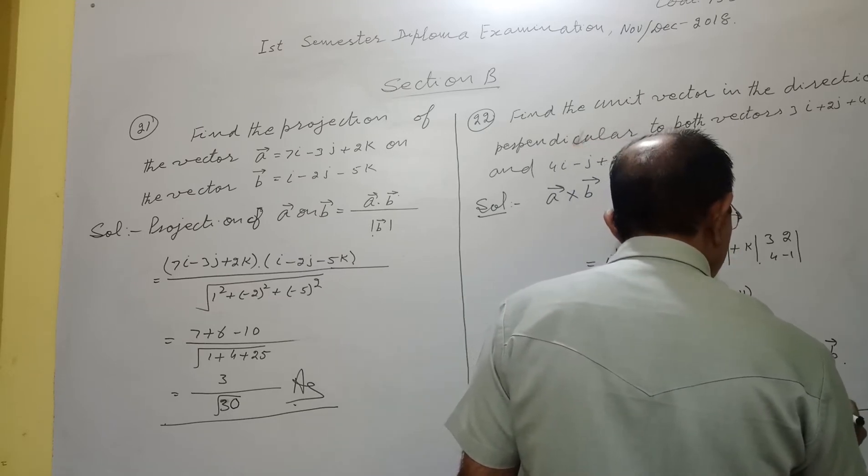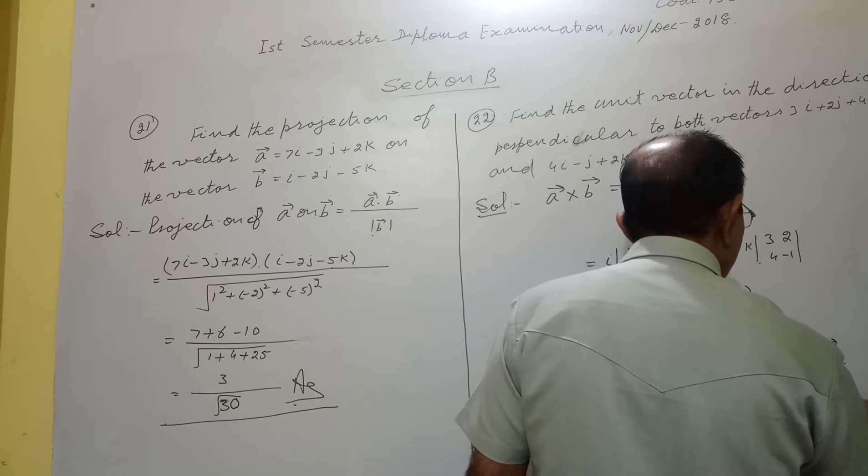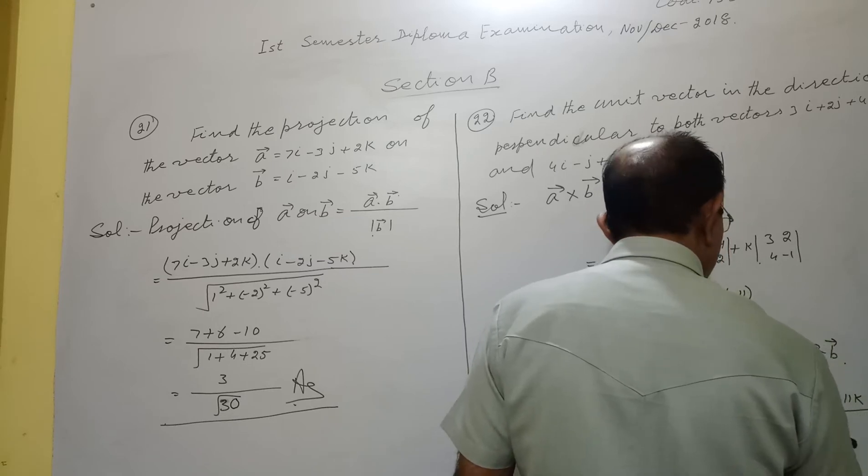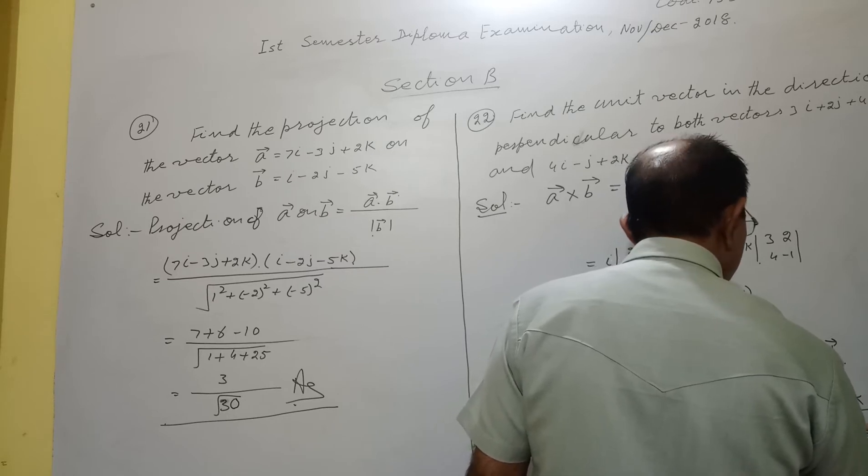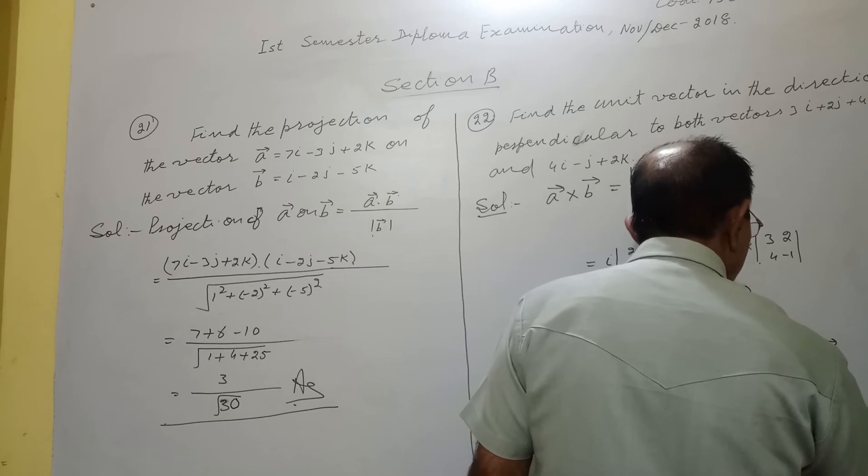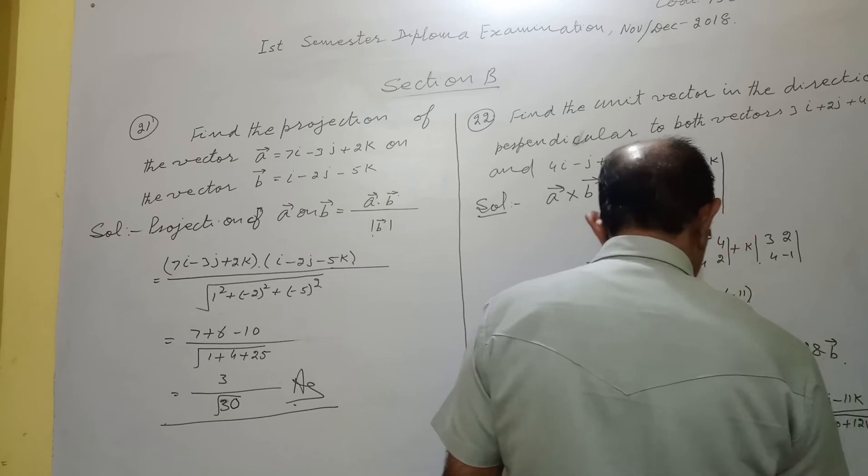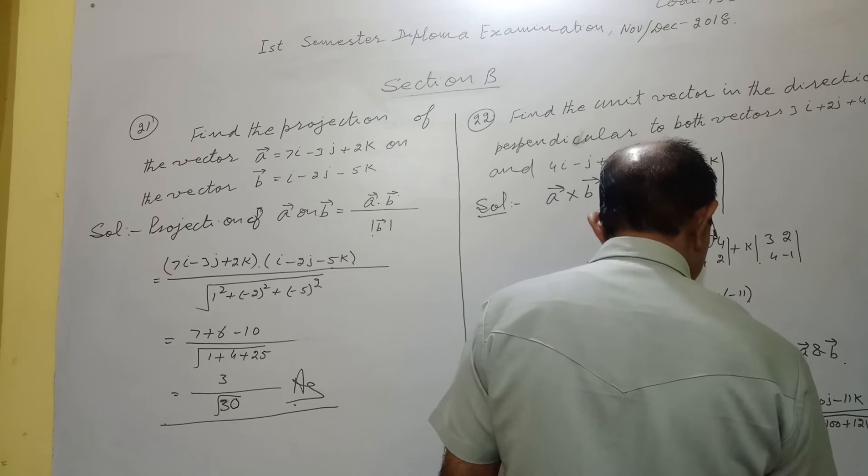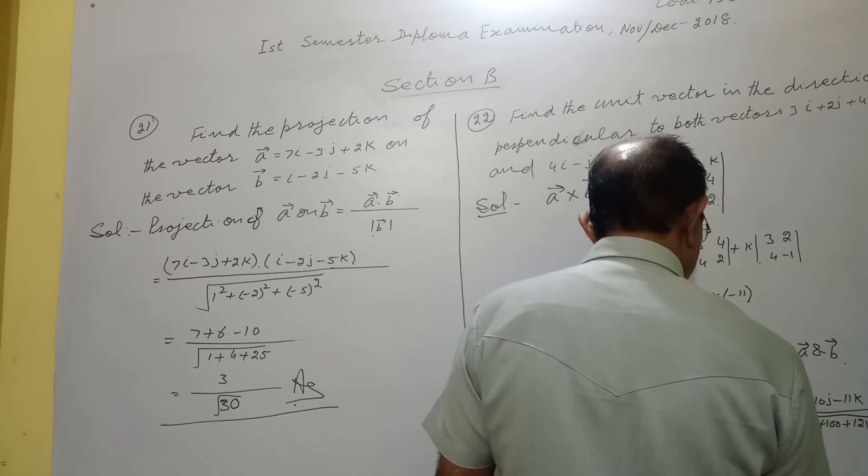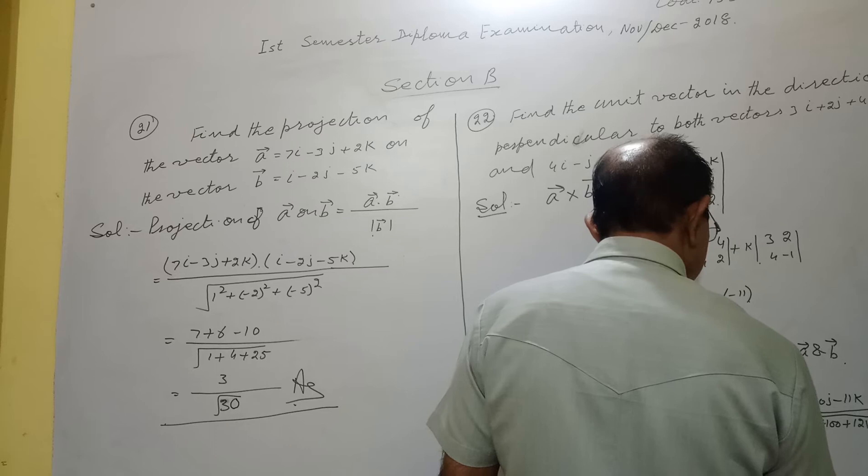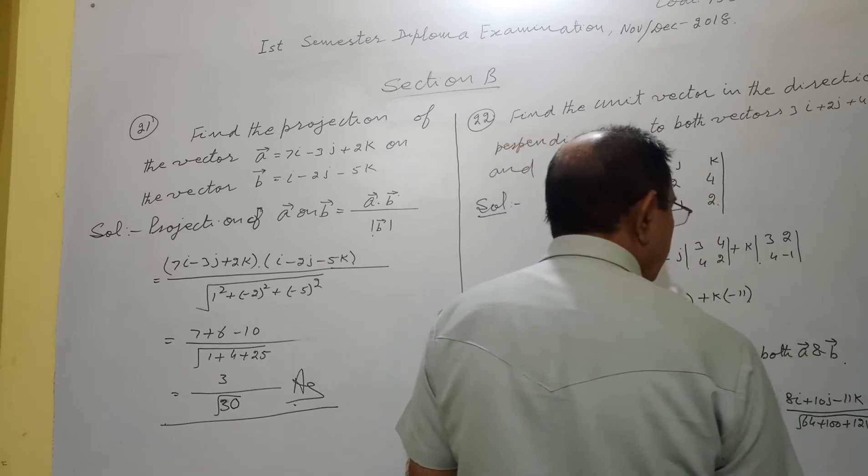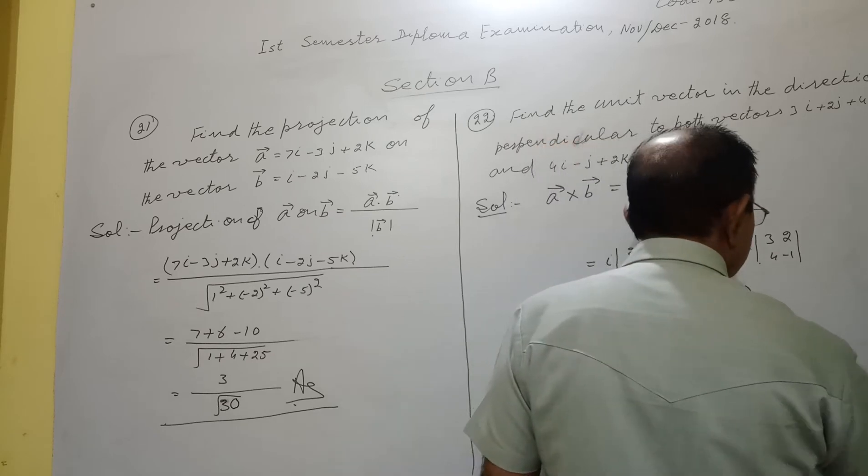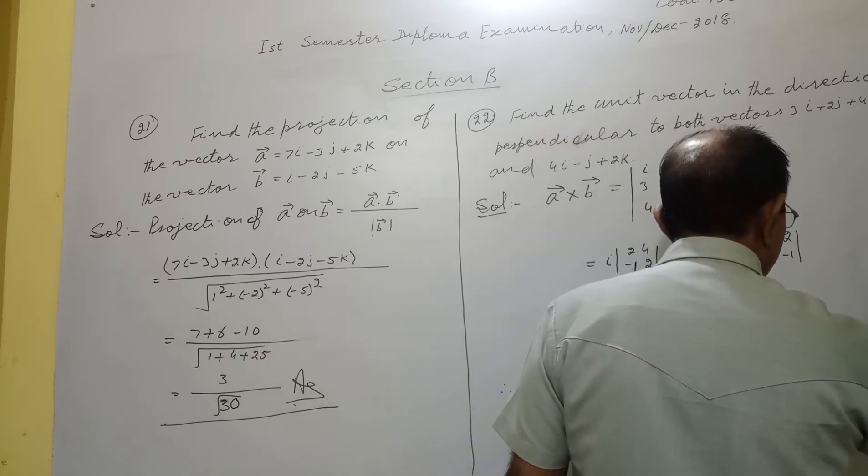8i, 10j, minus 11k divided by the square root of 64 plus 100 plus 121. Thus, it will come out to be 8i plus 10j minus 11k divided by square root of 285.